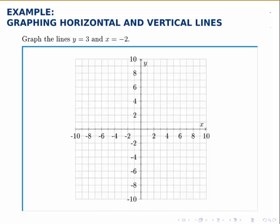Graph the lines y equals 3 and x equals negative 2. We're given a hint here that these lines are going to be horizontal and vertical, but if we didn't recognize that, all we have to do is think about what this means.